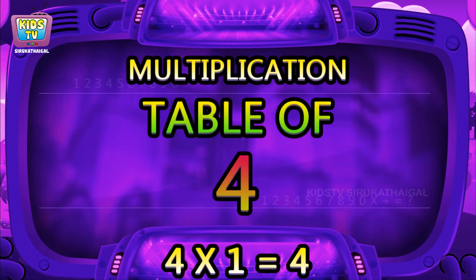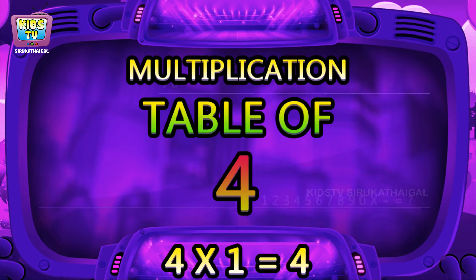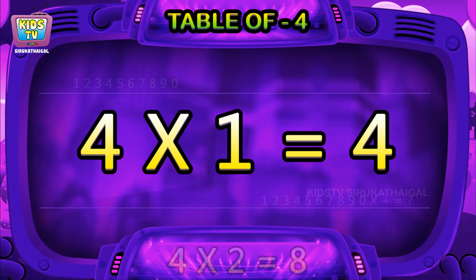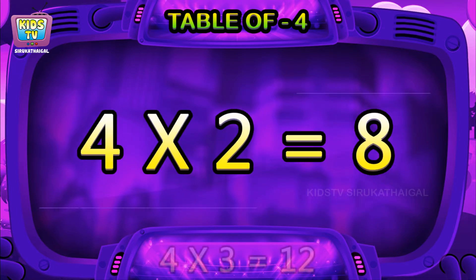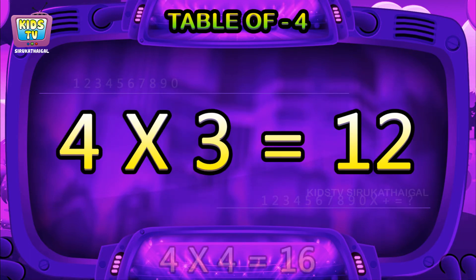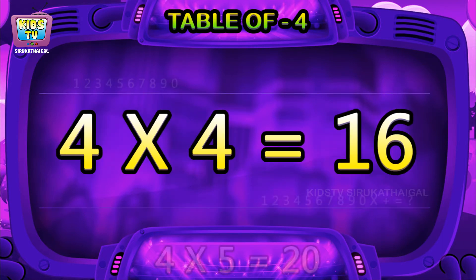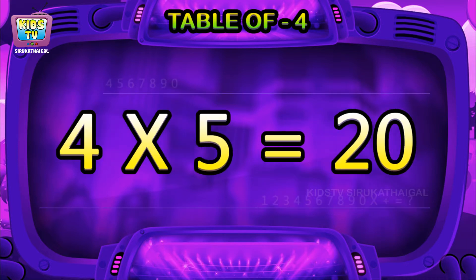Hi friends, now we will learn table of four. Four ones are four, four twos are eight, four threes are twelve, four fours are sixteen, four fives are twenty.